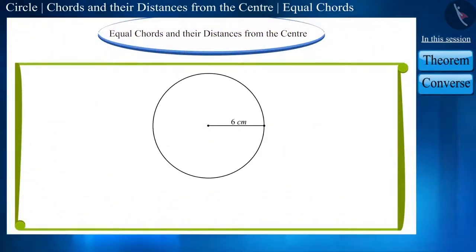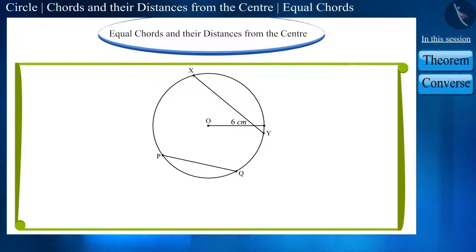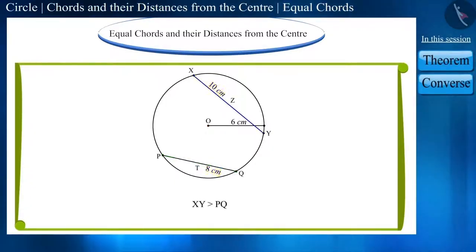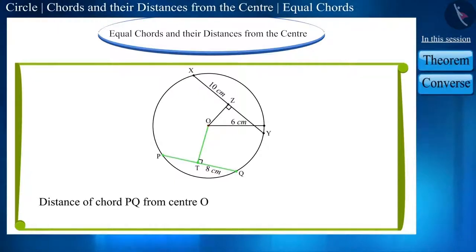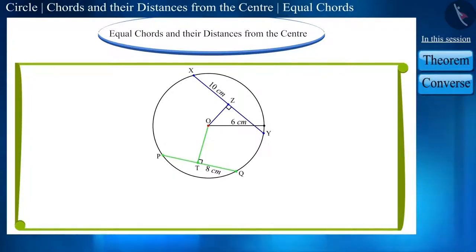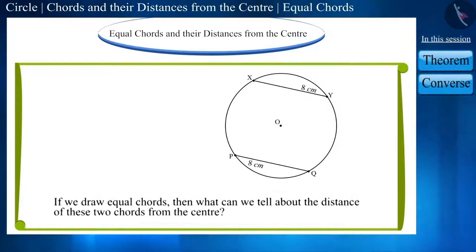Friends, draw a circle whose center is O and radius is 6 cm. Now, let's draw two chords PQ and XY in it, whose lengths are 8 cm and 10 cm respectively. What can we tell about the distance of these two chords from the center? These chords are not equal. We know that the larger the length of a chord, the shorter is its distance from the center. Chord PQ is at a greater distance from the center O than chord XY. We can check this by drawing a perpendicular from the center on both these chords.